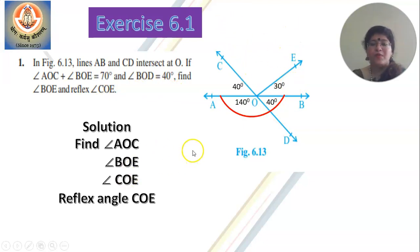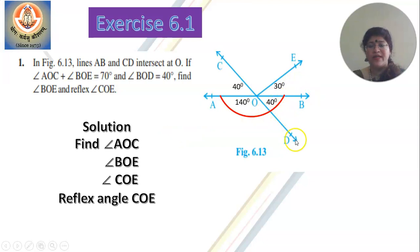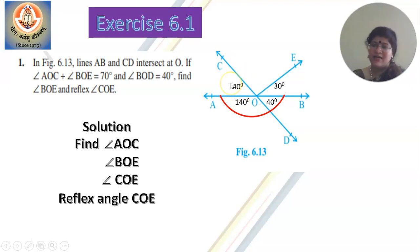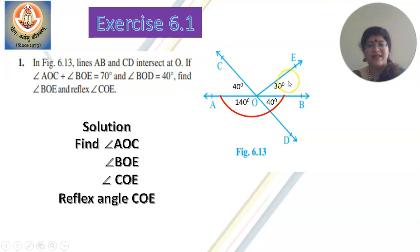How do you solve this? These are the things you need to find out first. They have given you angle BOD as 40 degrees. Immediately write down the vertically opposite angle — that is angle AOC. What will angle AOC be? It will also be 40 degrees. And they have mentioned that this angle plus another angle totals 70 degrees, so if BOD is 40 degrees, what will be the measure of angle BOE? It will be 30 degrees, because 40 plus 30 gives you 70.